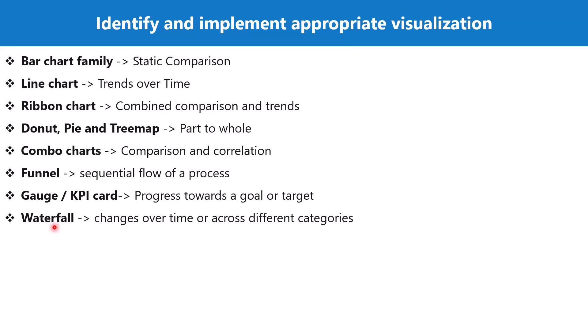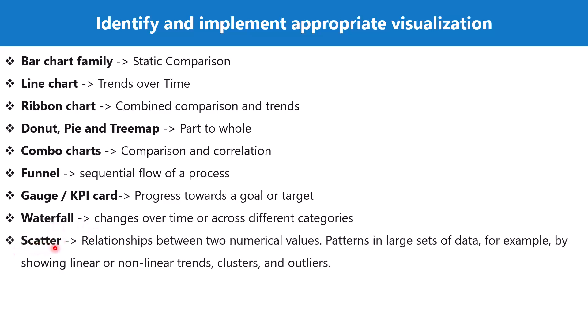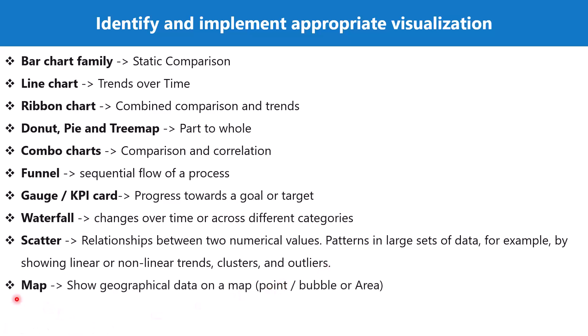Another very important visual is the scatter chart, which can be used to show relationships between two numerical values or two measures. If you want to show whether there is any relationship between those two measures, you can use a scatter chart. Patterns in large sets of data — such as linear or non-linear trends, clusters, and outliers — can also be shown on a scatter chart.